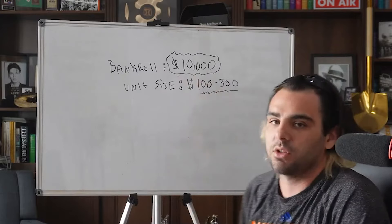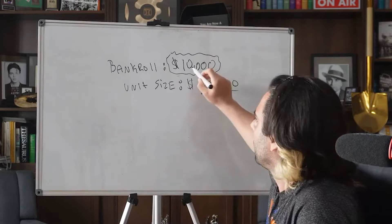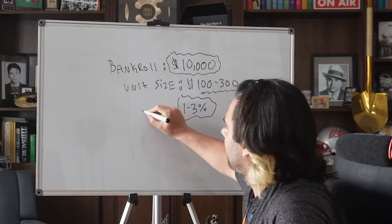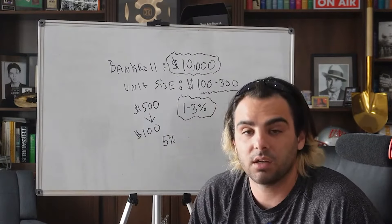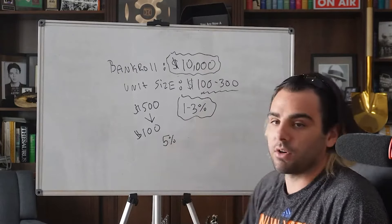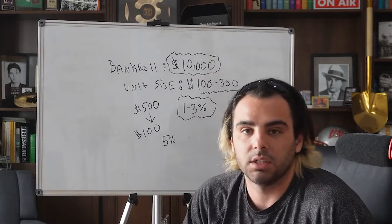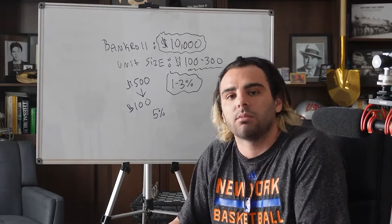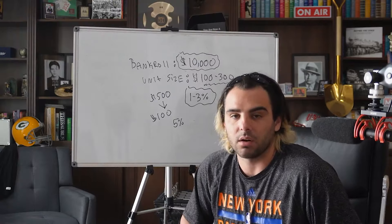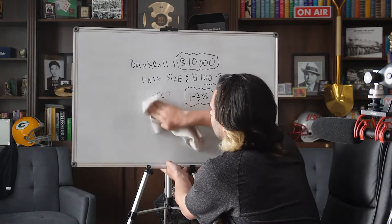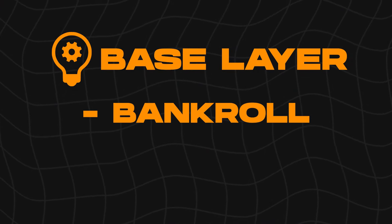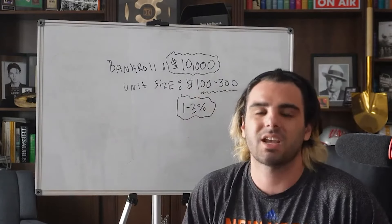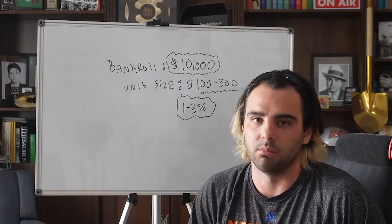The base layer of a sports betting strategy is money management: understanding your bankroll and unit size. If you don't have a $10,000 bankroll, you should not be betting $100 to $300 per game. Whatever your bankroll is, bet one to three percent — except if your bankroll is $500 or lower, then bet five percent, because otherwise you're barely betting a dollar a play and getting nowhere.